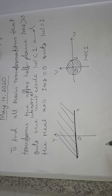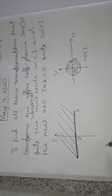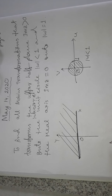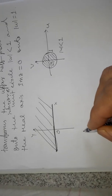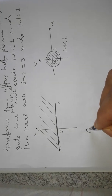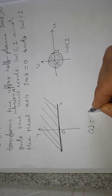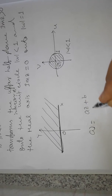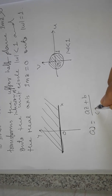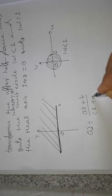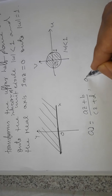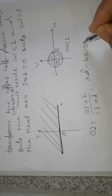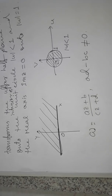We want to find all such Möbius transformations in general. We have the Möbius transformation w = (az + b)/(cz + d), where ad − bc ≠ 0. We want to find the conditions on a, b, c, d.